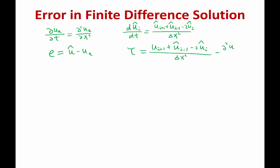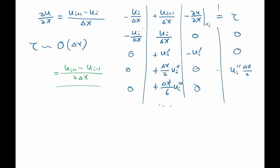Actually, tau is equal to this not on the numerical solution but on the analytical solution. So I'm going to write 'a' here on each term. The important thing is that the discrete operator and the continuous operator are applied to the same solution when you're looking at Taylor series analysis. All of these analyses are only true when both operators act on the same function. If they are different functions, it doesn't apply, and they have to be the analytic solution because only the analytic solution has a derivative.